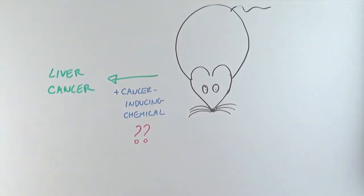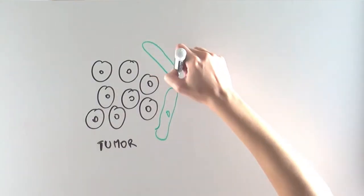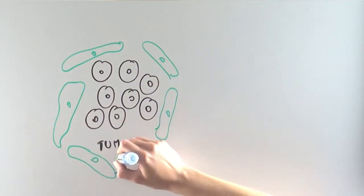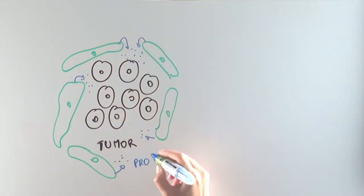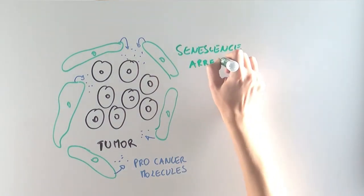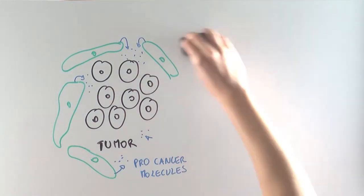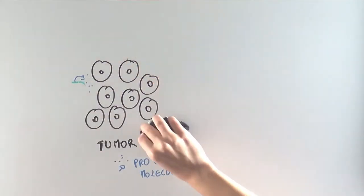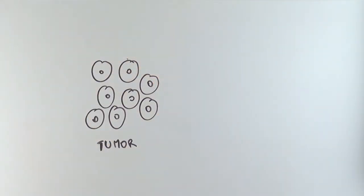So what could explain this? The scientists noticed that the cells around the tumor were producing lots of molecules that promote cancer. These cells were in a state of arrest that we call senescence. When the senescent cells, or the molecules they secrete, were removed, obesity did not cause mice to develop cancer in the presence of the cancer-causing chemical.